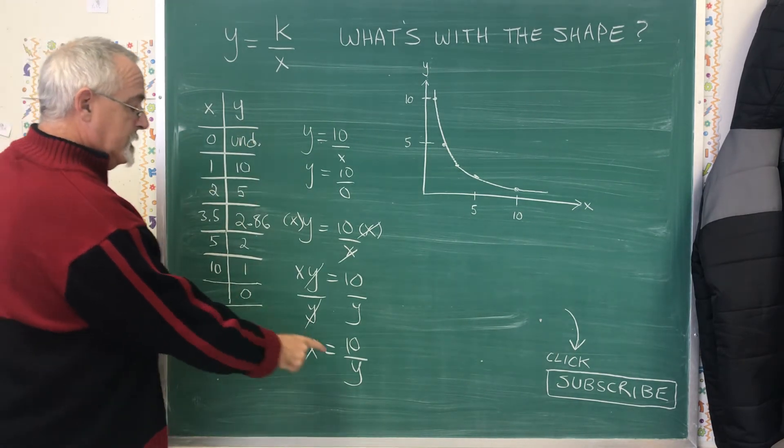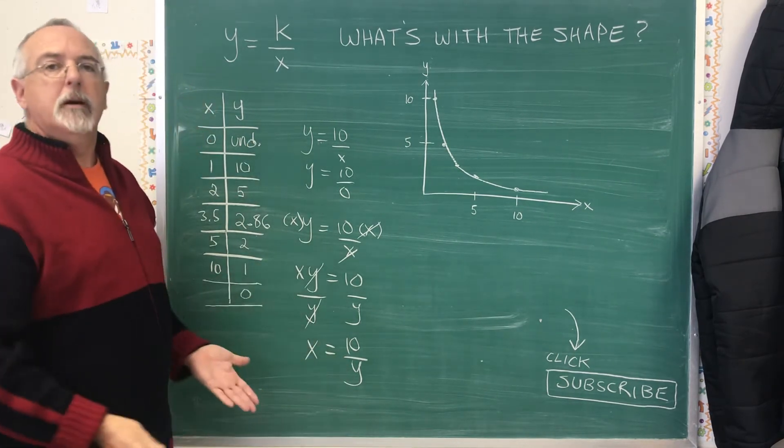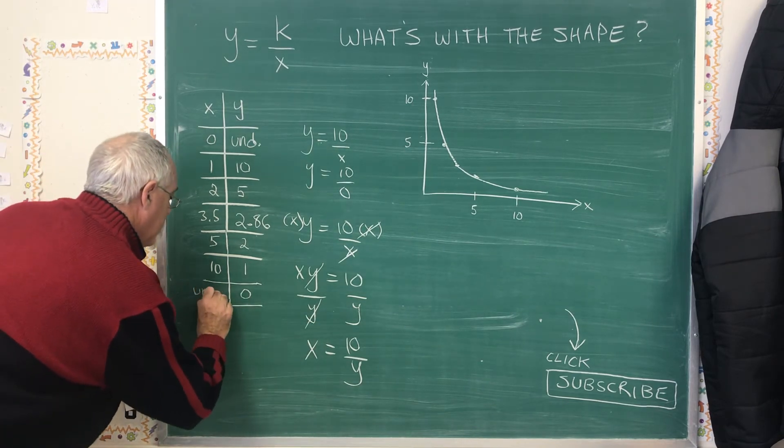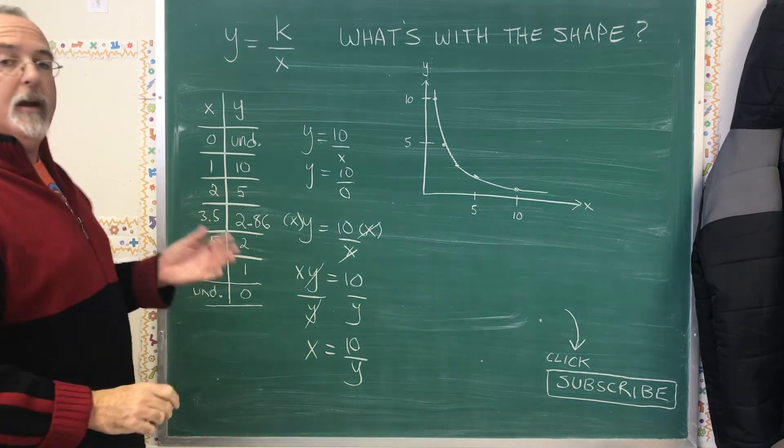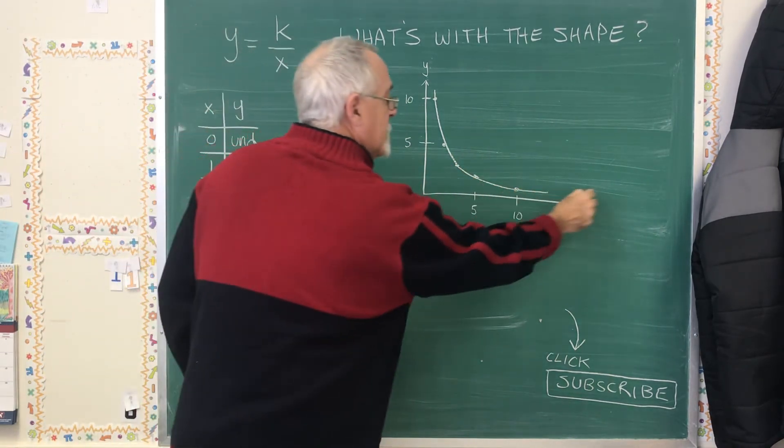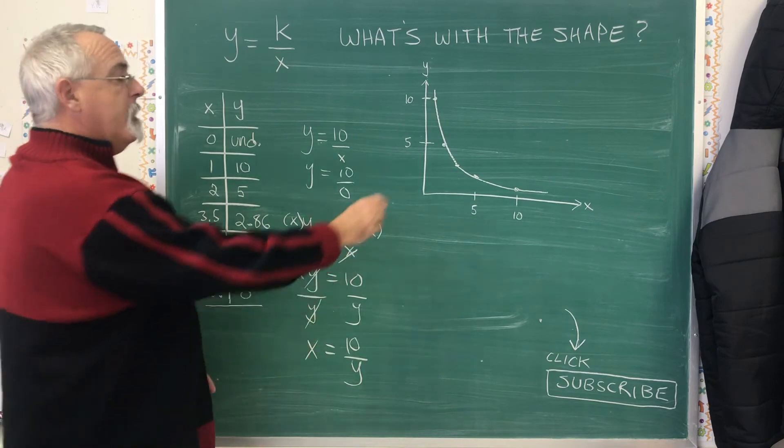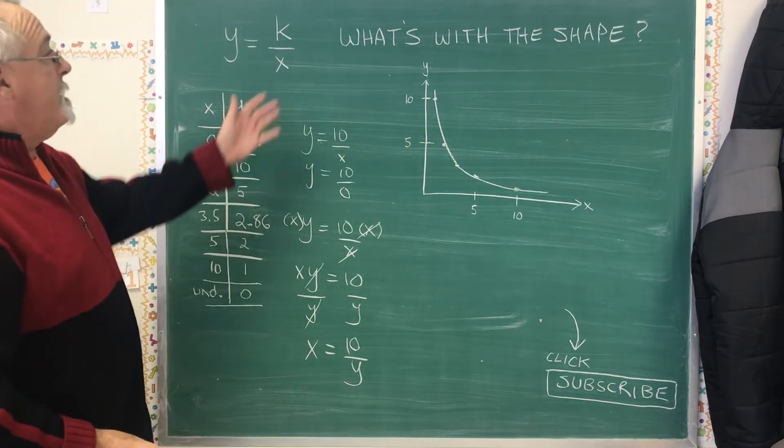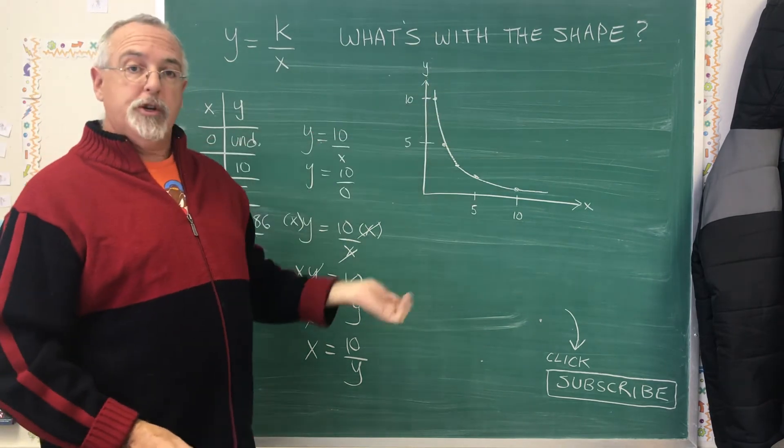And if I plug y equals 0 into this, and divide it by 0 again, I'm going to get an undefined answer. I'm going to get error in my calculator. And that's why on this other section of the curve, the curve approaches the x-axis but never touches it. That's the reason for this weird shape.